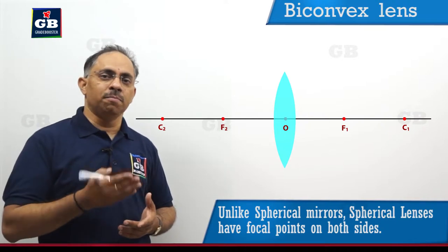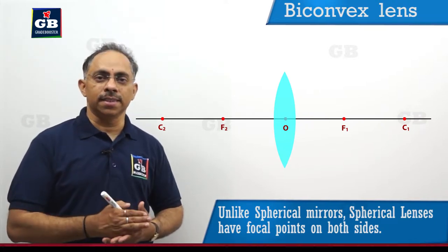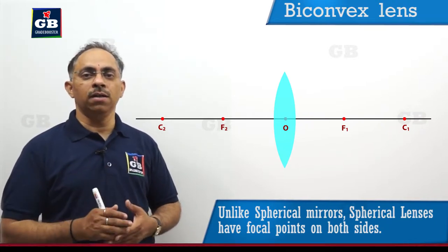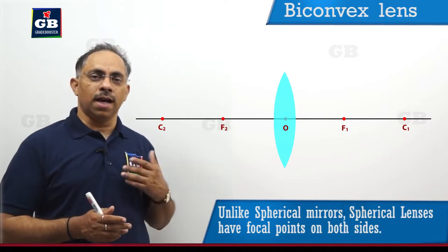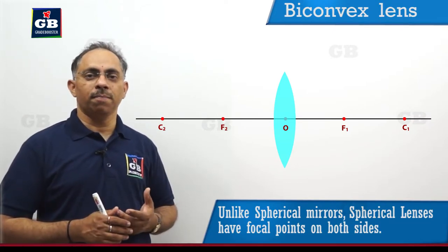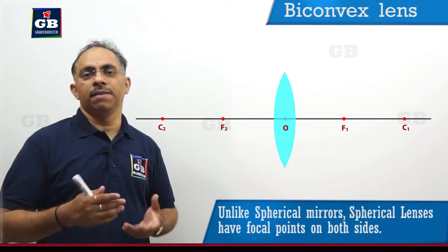Now unlike mirrors, in the case of lenses, it is possible for us to have focus points on either sides. Why? Because the two surfaces are refracting surfaces.